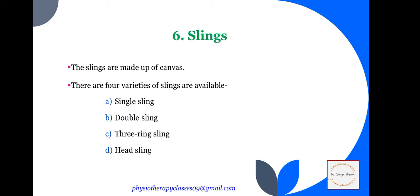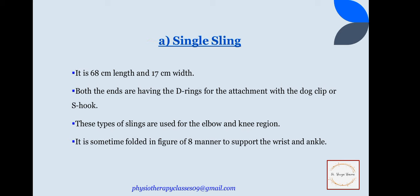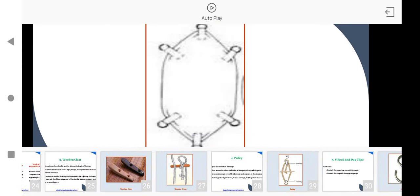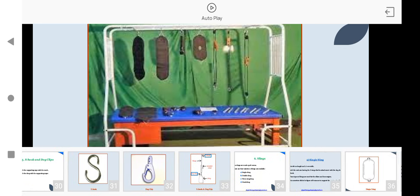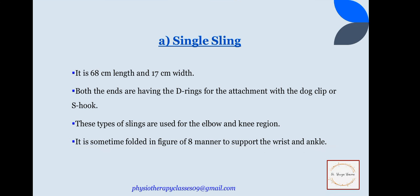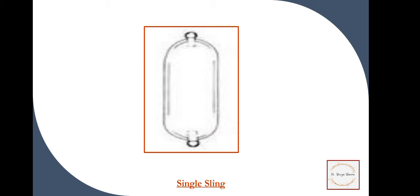Then the next instrument is slings. Slings are made up of canvas and there are four varieties: single sling, double, three-ring, and head sling. The single sling is 68 cm in length and 17 cm wide, with both ends having D-rings for attachment with dog clips and S-hooks. These are used for elbow and knee region, and are sometimes folded in a figure-of-8 manner to support the wrist and ankle.